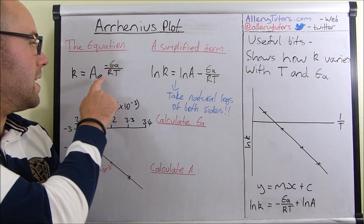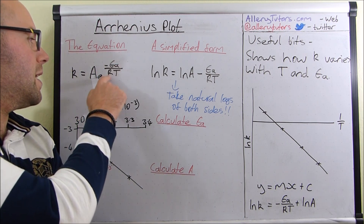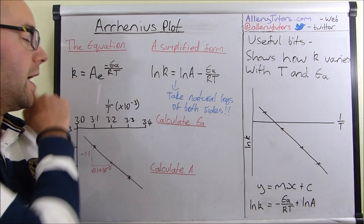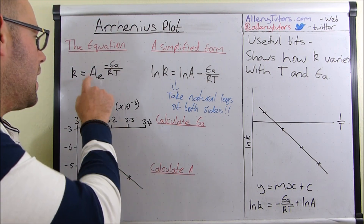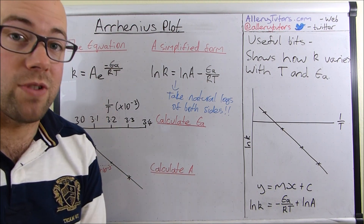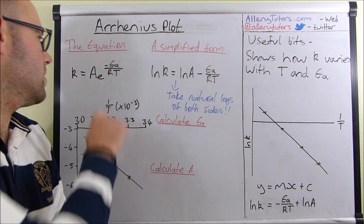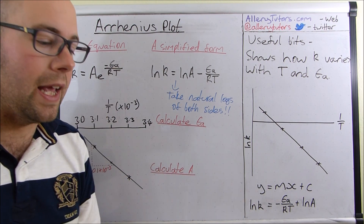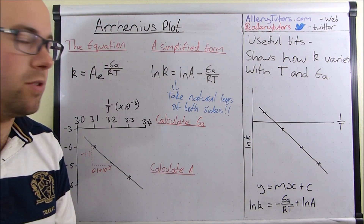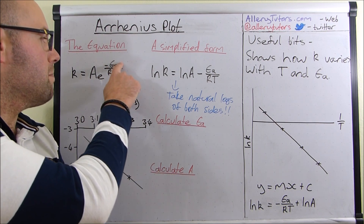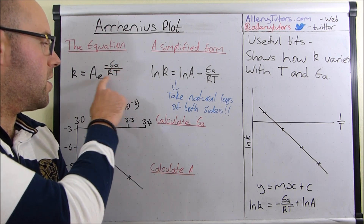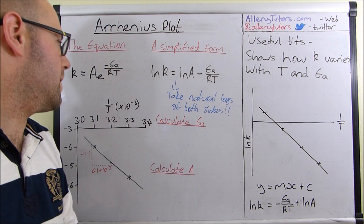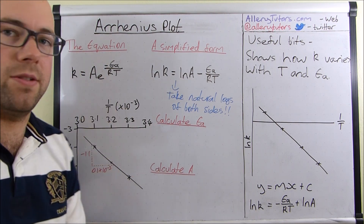So k equals A times e to the minus EA over RT. Effectively that just means k is the rate constant, A is the Arrhenius constant, and this is put against an exponential — the little e button, which I'll show you in a minute on the calculator — to the minus activation energy. R is just your gas constant and T is your temperature.